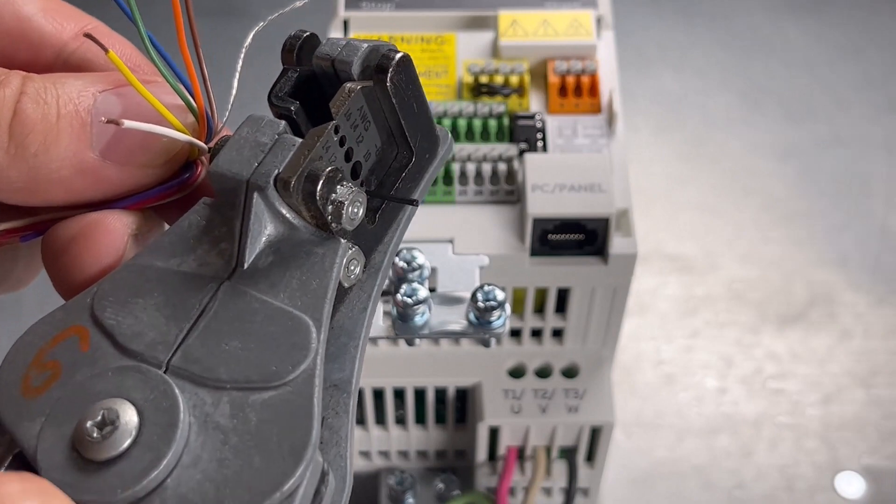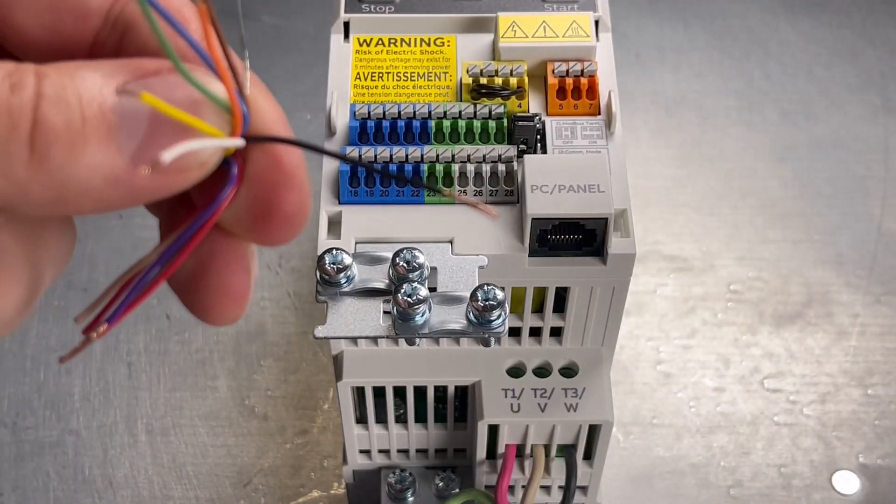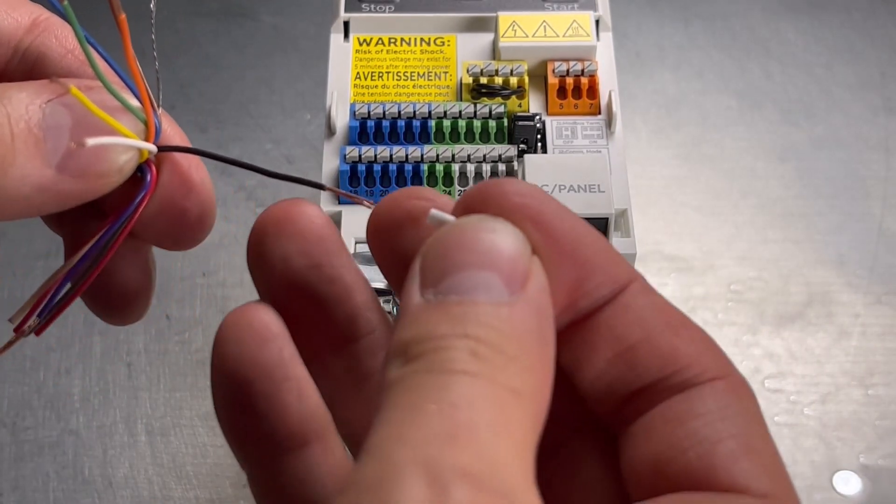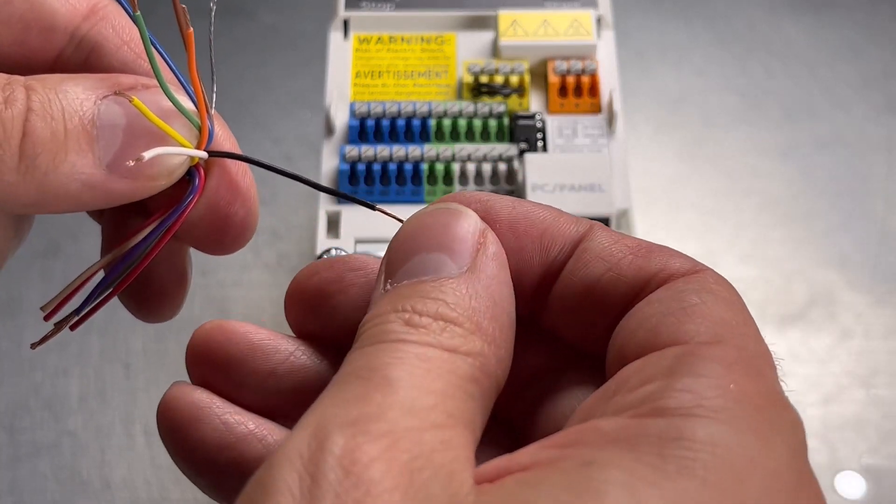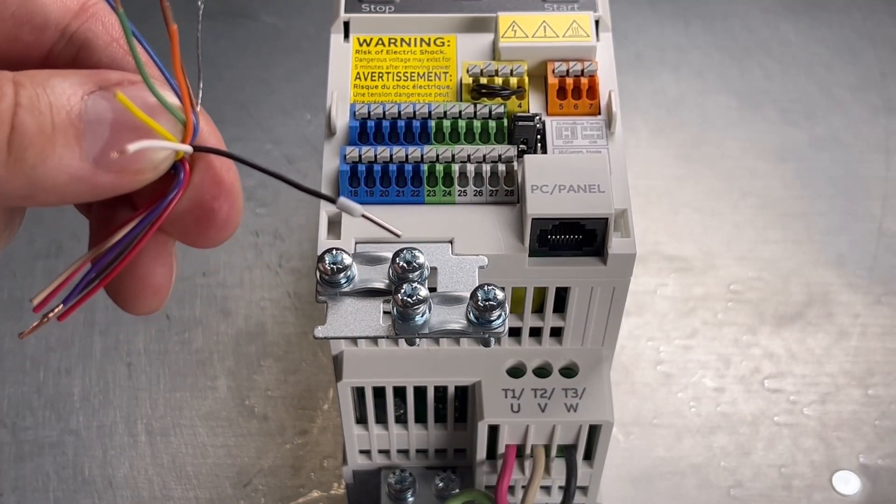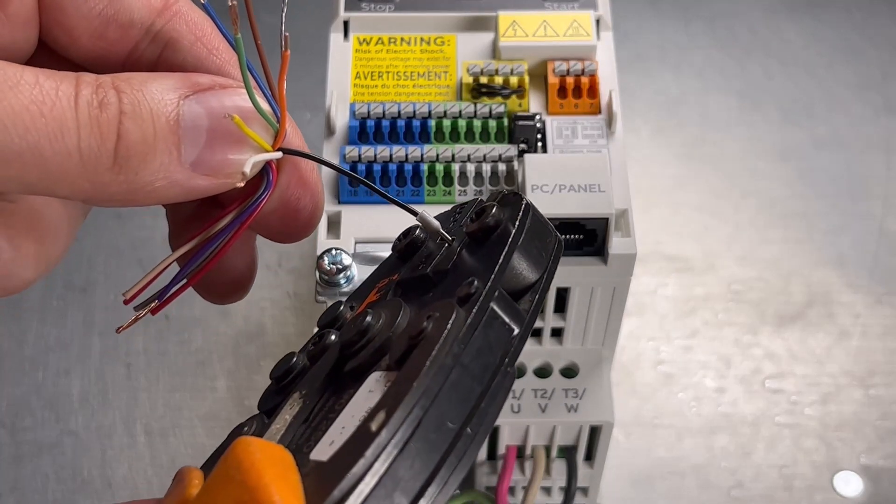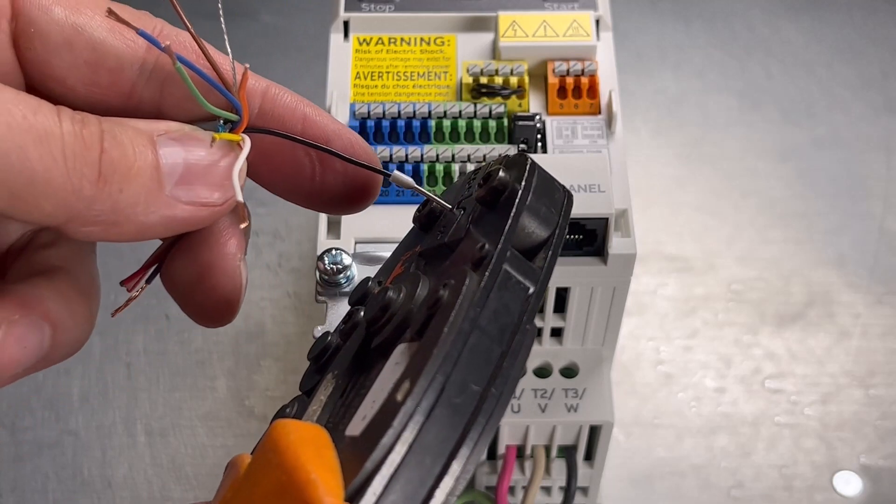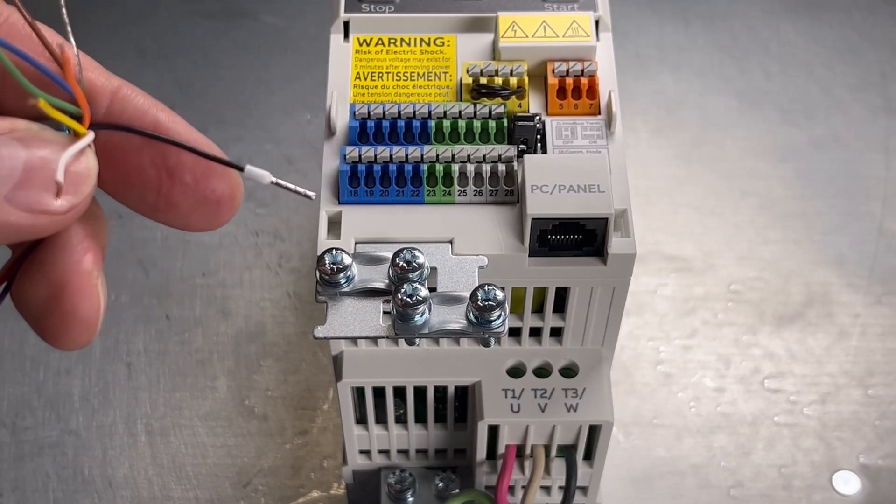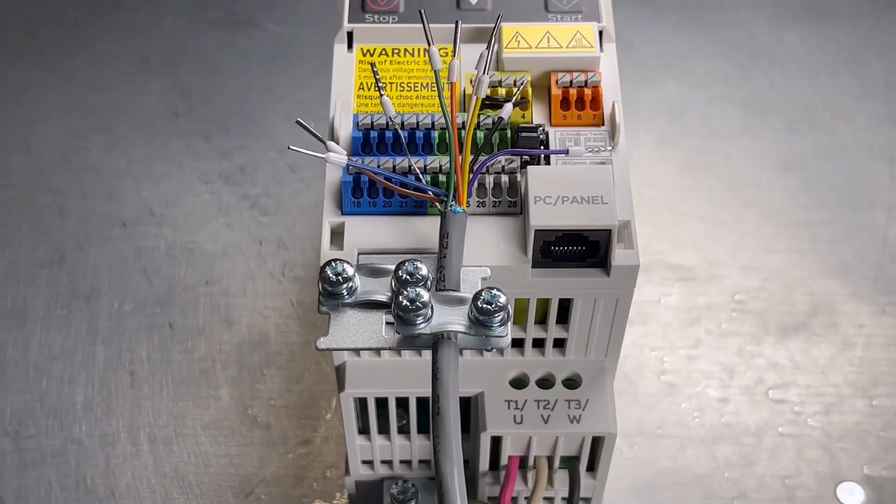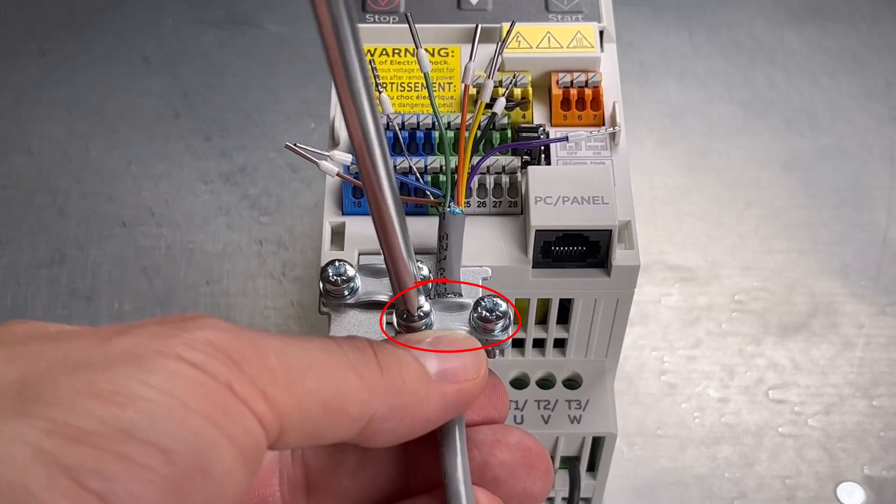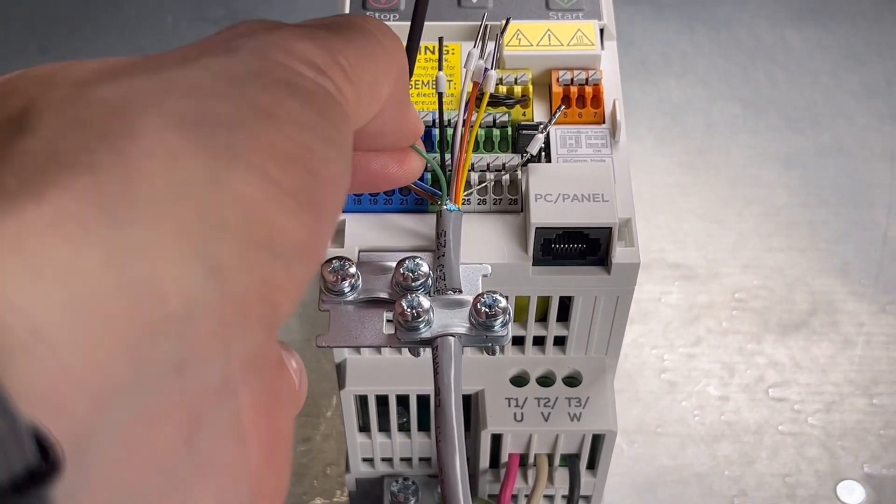Strip the ends of the control cable conductors. For stranded or multi-wire conductors, install ferrules at the bare conductor ends. Strip a part of the outer shield of the control cable. Use a 360-degree grounding clamp to connect the cable to the grounding tab. Connect the conductors to the correct control terminals.